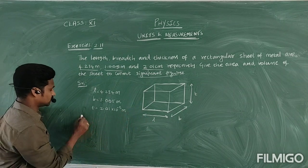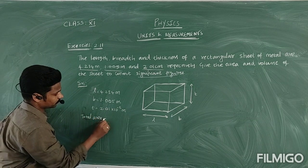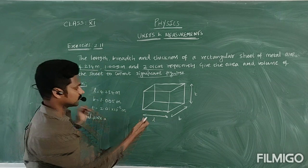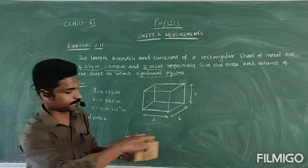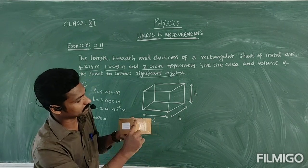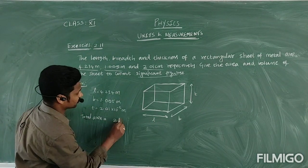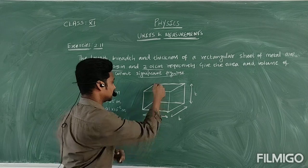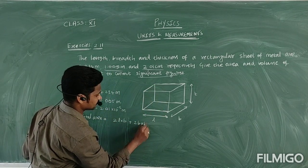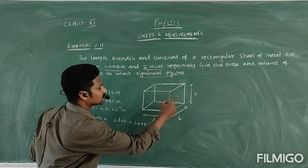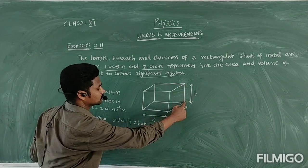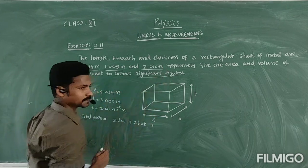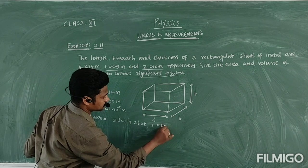So I can write total area. In the top and bottom — the same — that is length × breadth, two times. Plus two times breadth × height (thickness). Then plus two times thickness × length for the front and back view. So two is common: total area = 2 × (length×breadth + breadth×thickness + thickness×length).